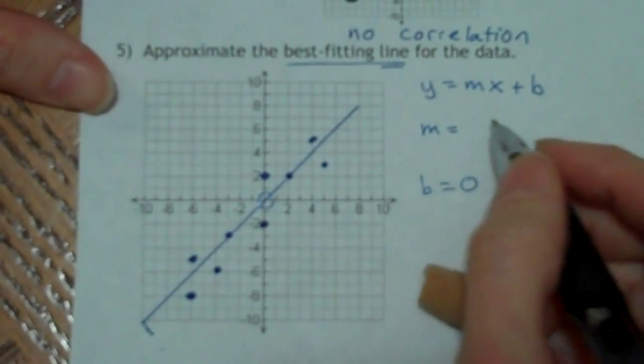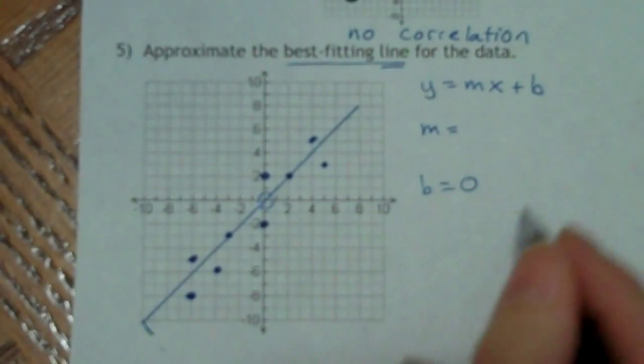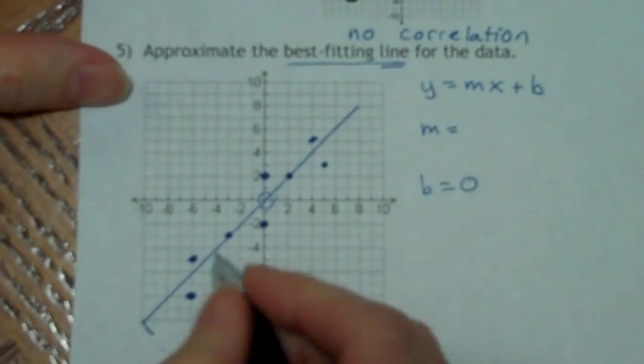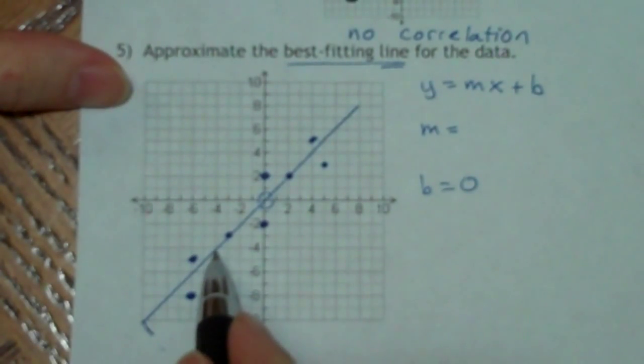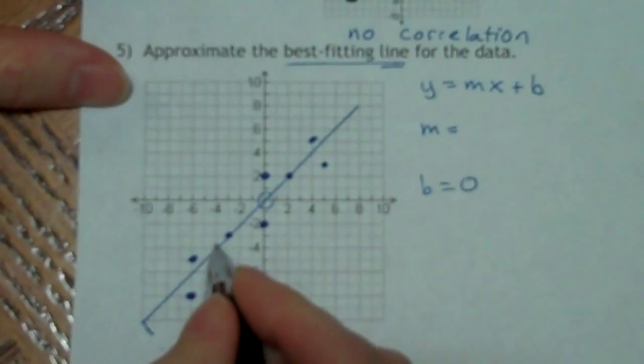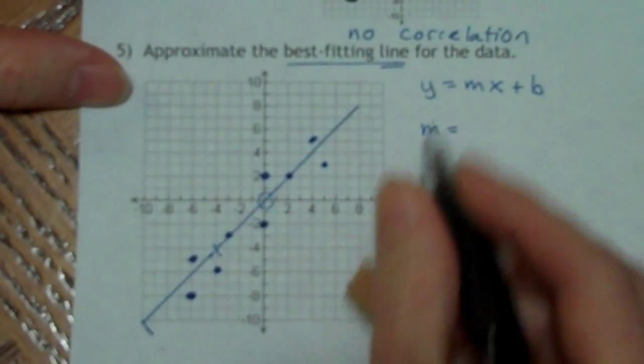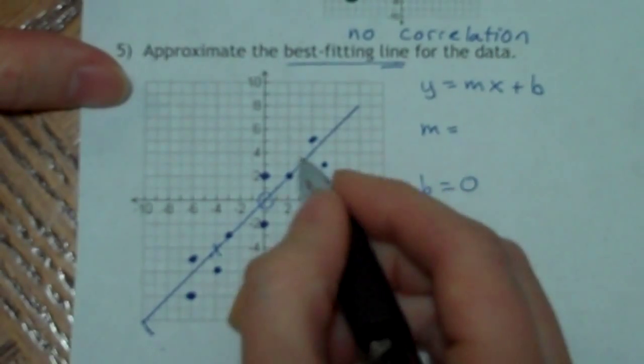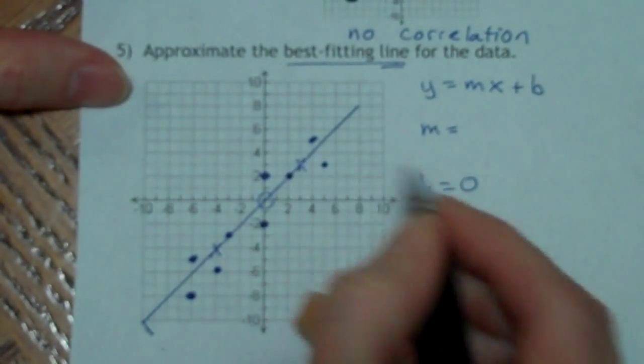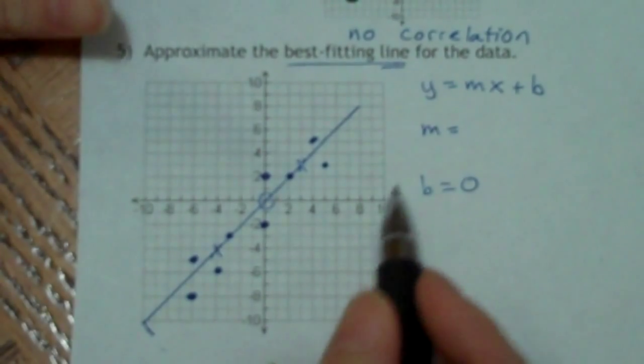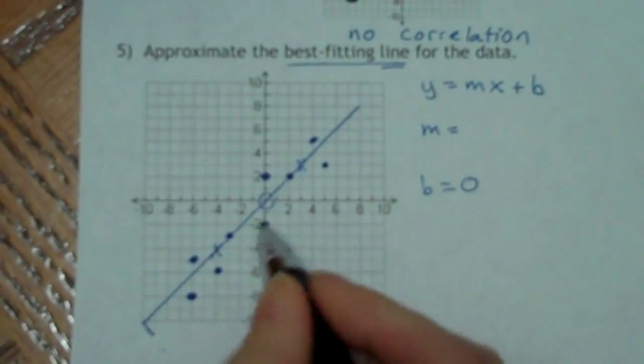Now my slope is a little bit trickier. So what I need to do is pick two points on my line. And what I want to look for is points where it actually goes through an intersection. So not like here where it's the middle of the box, because then it's going to be harder to figure out what the numbers are. But I want to pick like this point here. And let's pick that point here, just so we're not picking data points. Because your data points won't always be on the line.